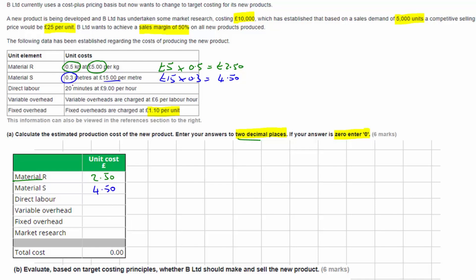For our labor, we need 20 minutes at £9 an hour. So if we take our £9 and multiply by 20 minutes divided by 60 minutes in an hour, that gives us a cost of £3 per unit. Again, we've got two zeros here, but the question wants to two decimal places, so we need to make sure we type in those two zeros. For the variable overheads, they're charged at £6 per labor hour, so again it's the £6 multiplied by the 20 divided by 60, and that gives us £2.